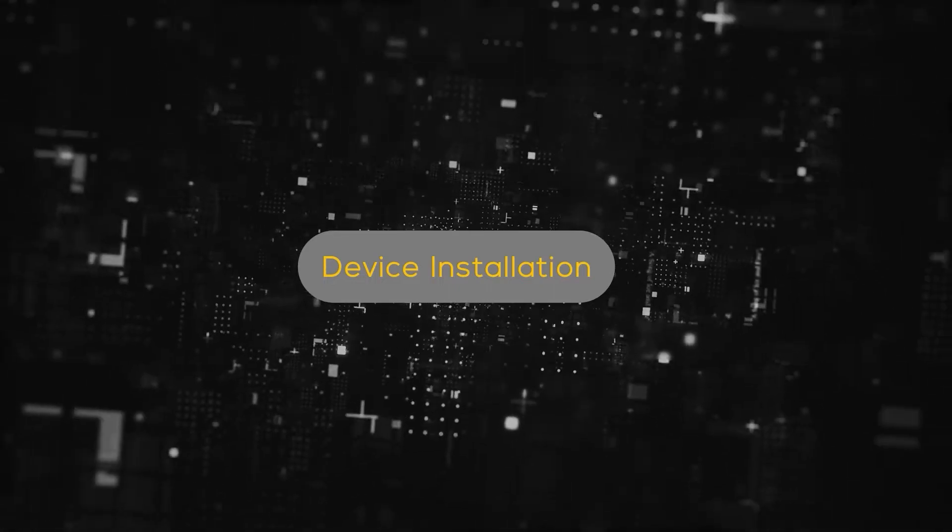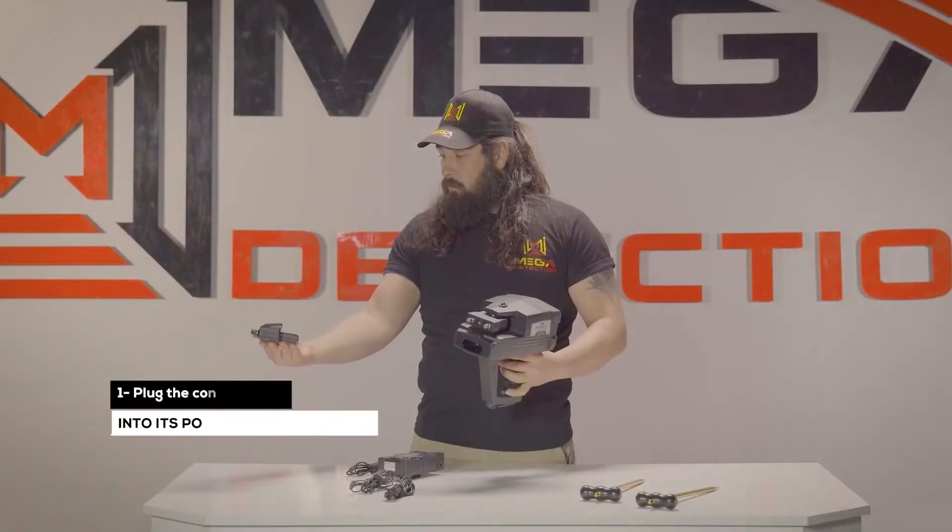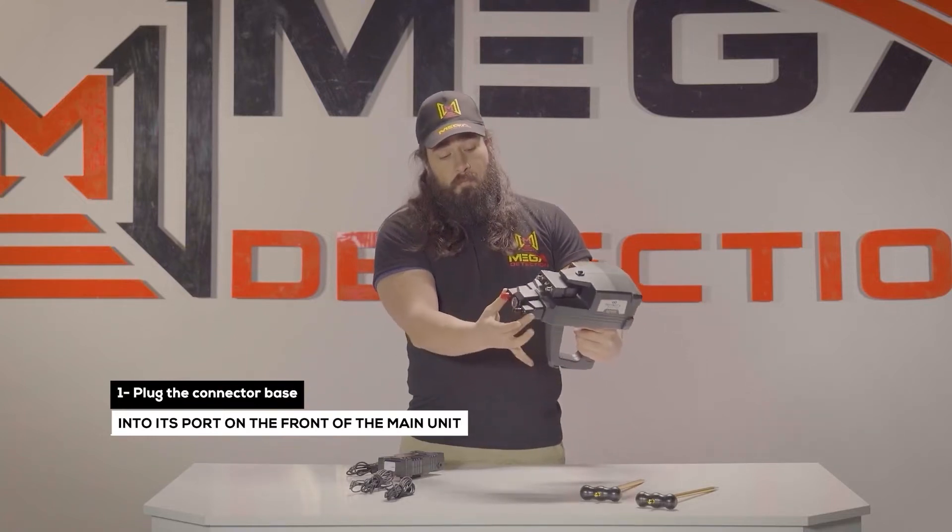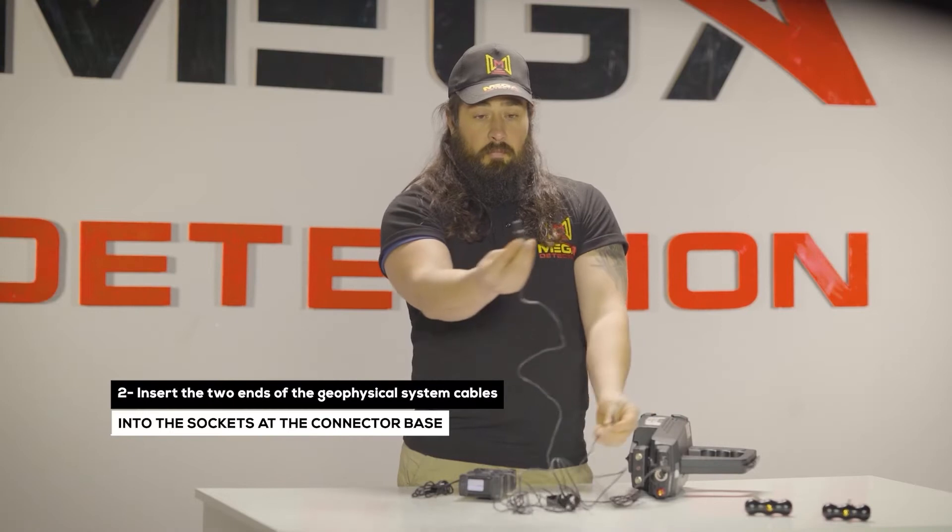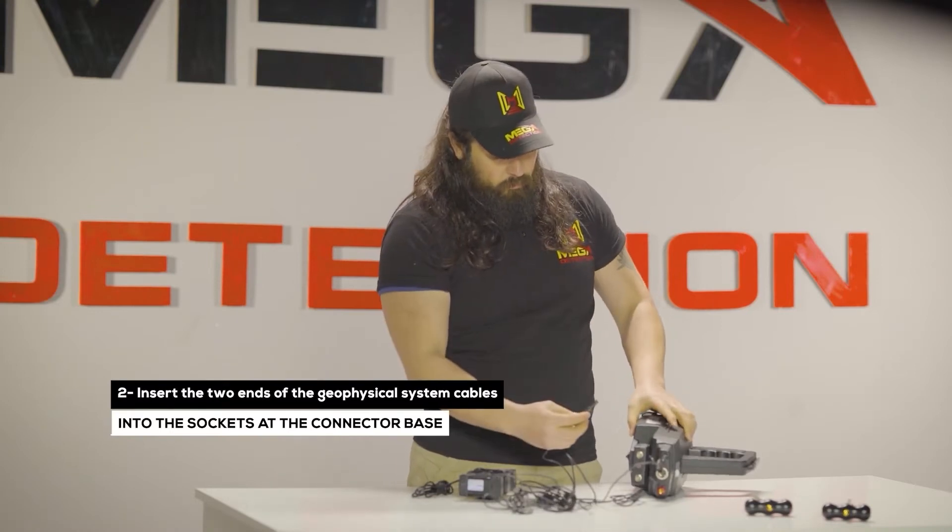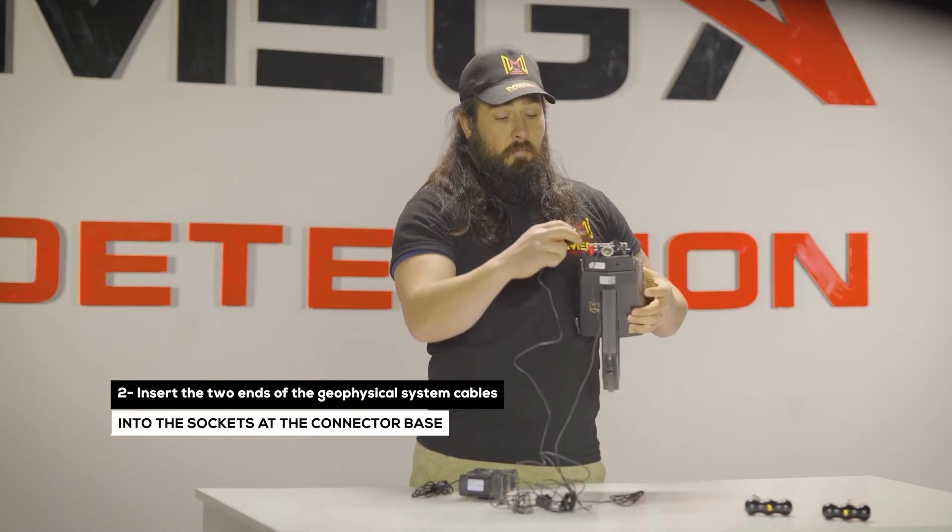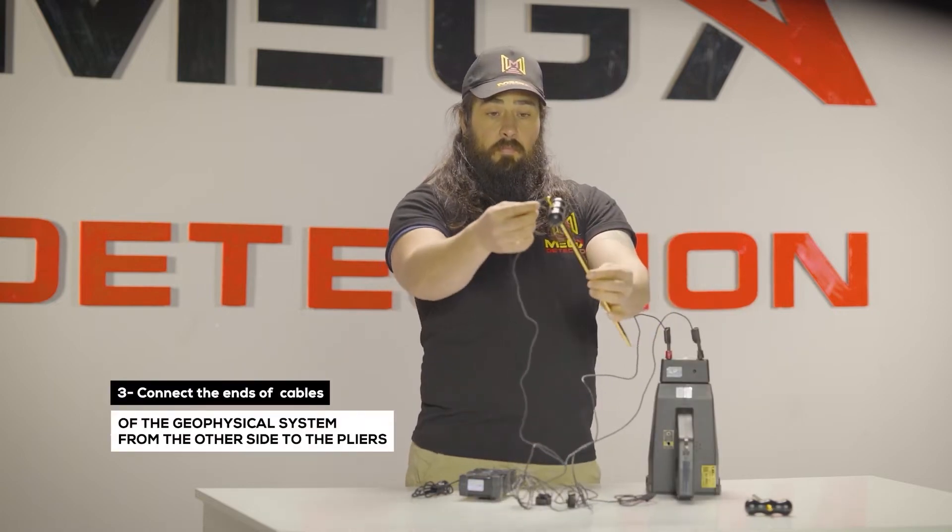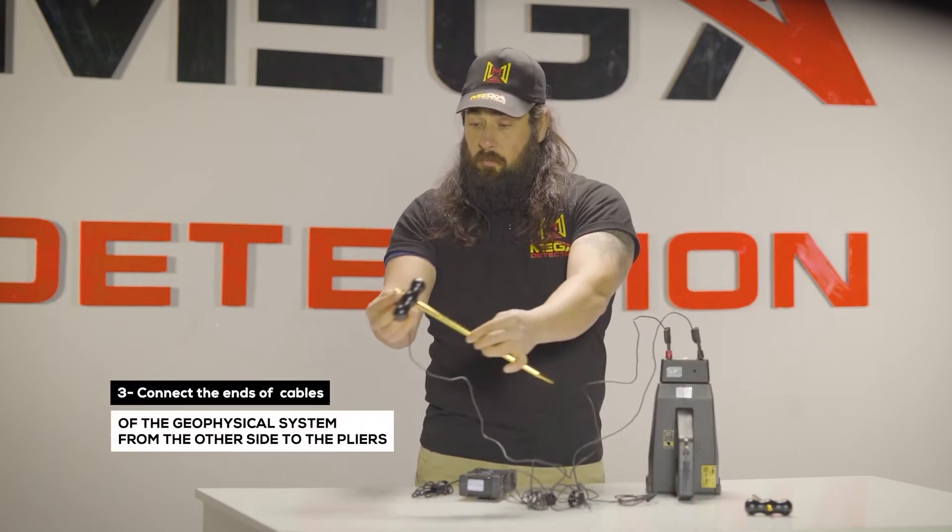Device installation: 1. Plug the connector base into its port on the front of the main unit. 2. Insert the two ends of the geophysical system cables into the sockets at the connector base. 3. Connect the other end of the geophysical system's cables to the pliers.